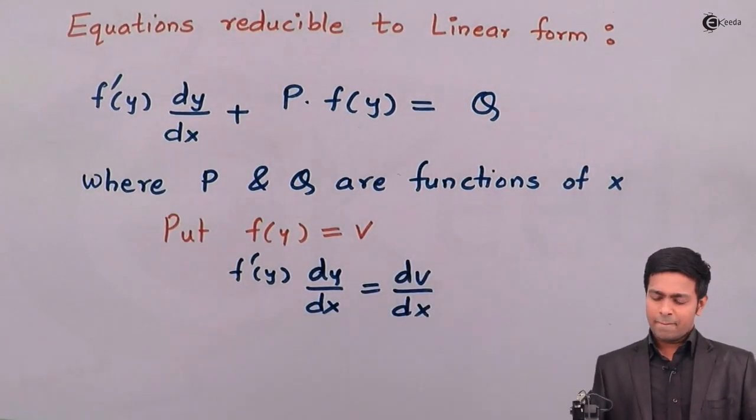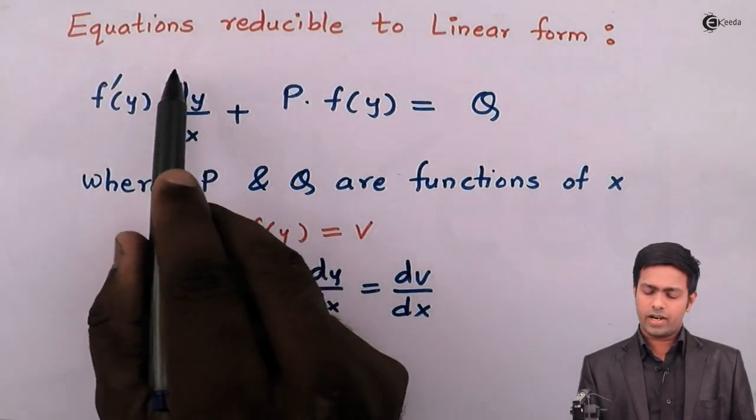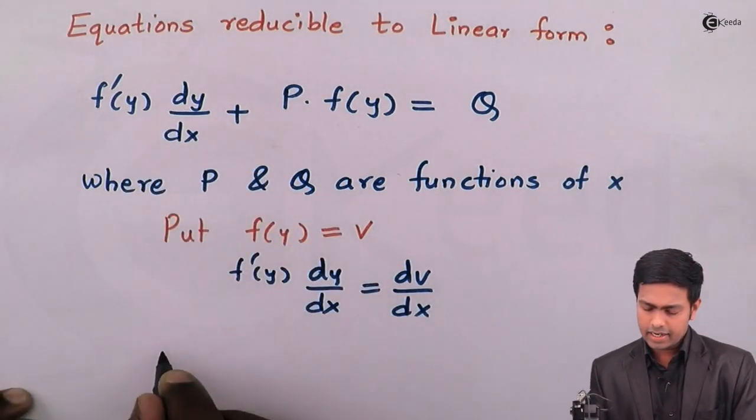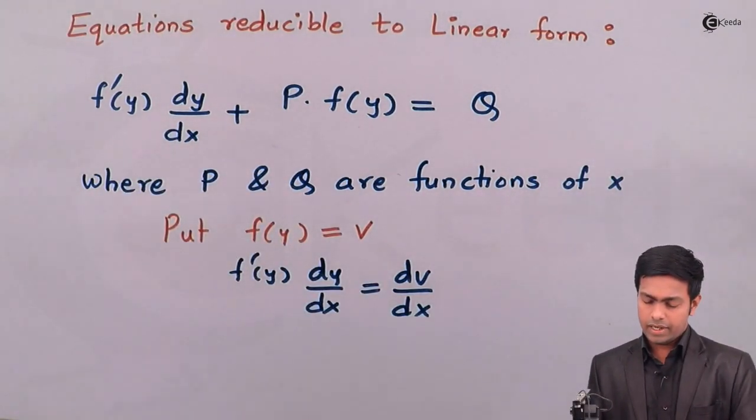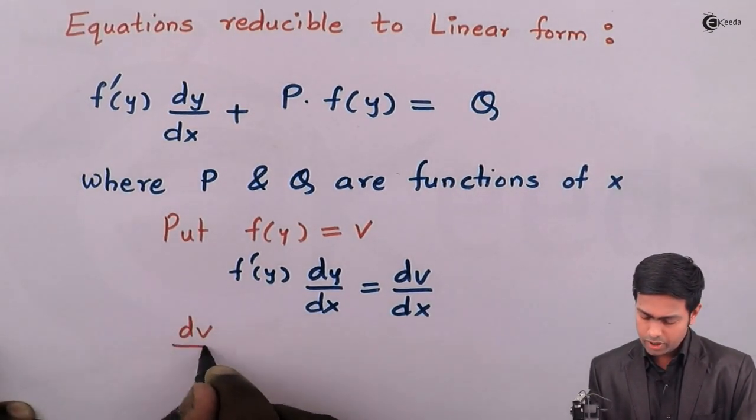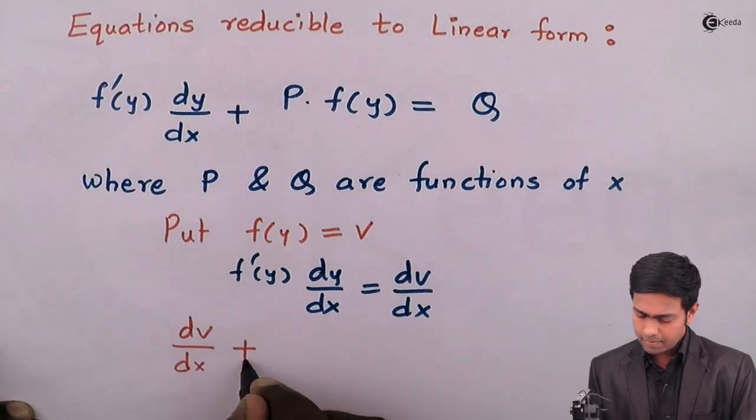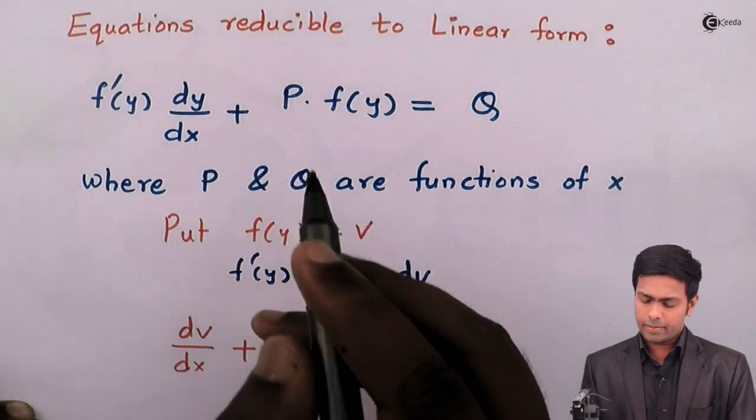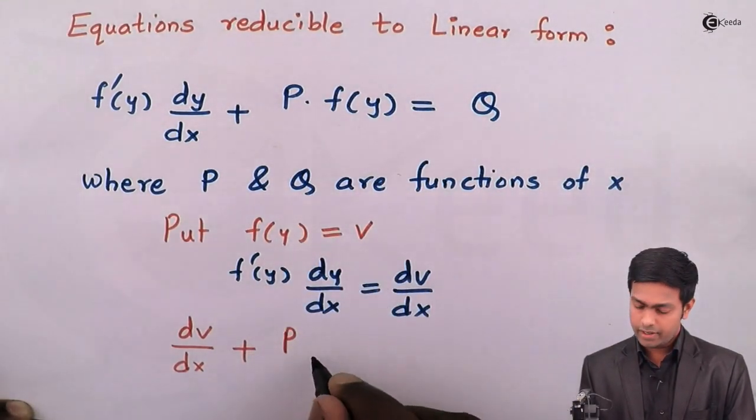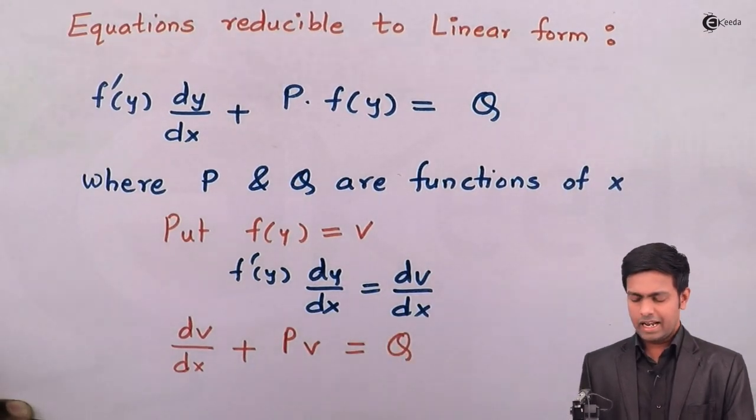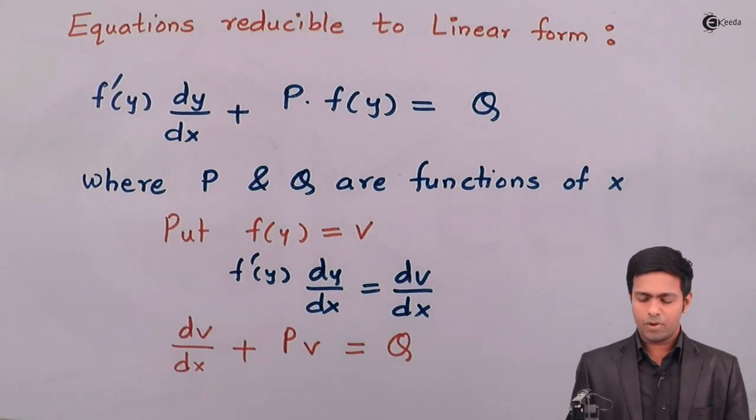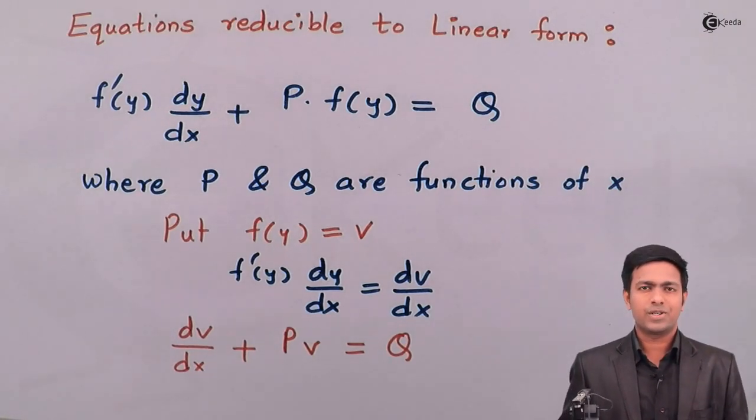So guys, here you can see that we got the substitution for this f'(y)dy/dx, that is dv/dx. So I can say that this equation will become dv/dx as a first term, so it is dv/dx plus this P will remain as it is, f(y). Now we have substituted it as v equals to Q. And now guys you must remember that this is our form of linear differential equation.